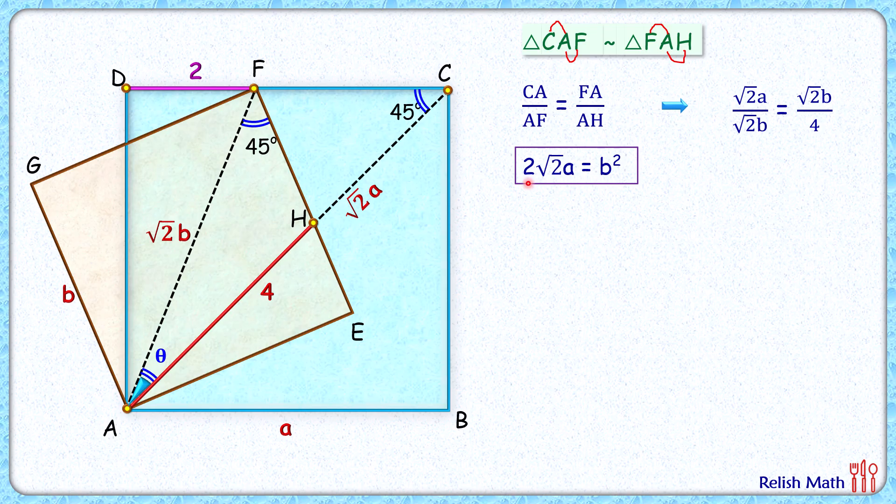This observation we'll use later on. Now, if you look at the right-angled triangle ADF in this pink triangle, AD is the side length of the square, so a centimeters. Applying Pythagoras theorem in this triangle, we'll get a squared plus 2 squared equals root 2b squared. Root 2b squared is nothing but 2 times b squared.